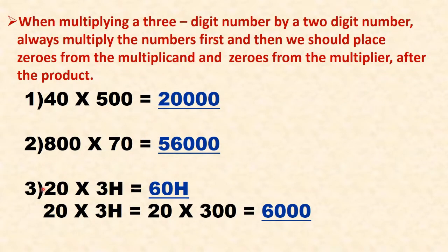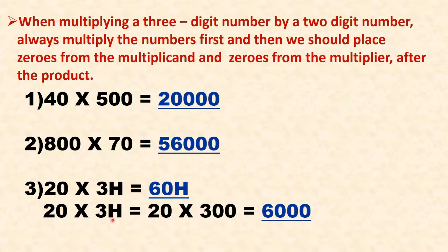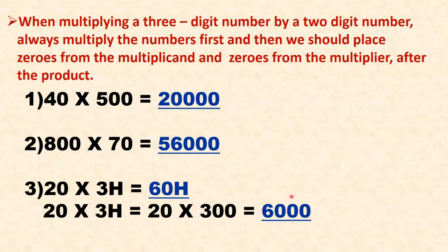Next example: 20 multiplied by 3H. First, multiply 2 by 3 to get 6. Place the one zero from 20 and the H from 3H next to the product 6, giving 60H. In expanded form, 3H means 300, so 20 multiplied by 300: multiply 2 by 3 to get 6, then place the one zero from 20 and the two zeros from 300 next to 6, so the answer is 6000.